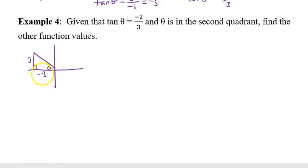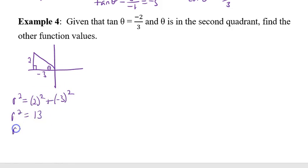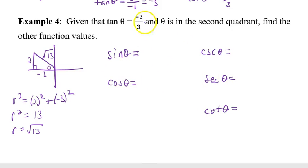Use the Pythagorean theorem to find r: r² = 2² + (−3)² = 4 + 9 = 13, so r = √13.